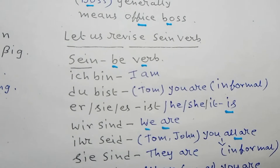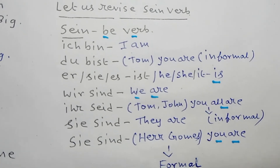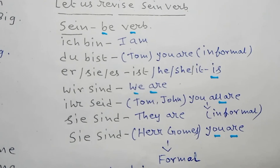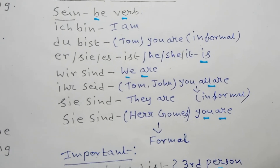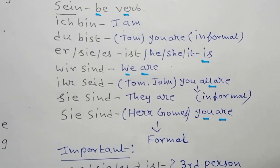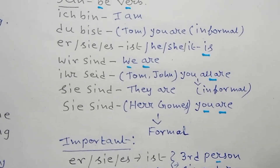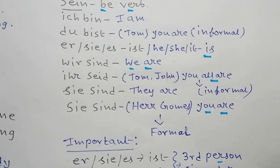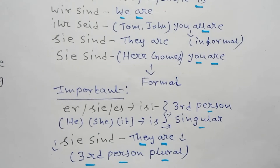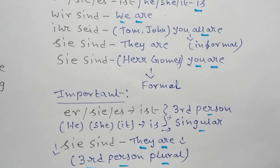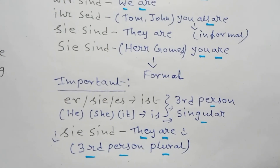Now let us revise the sein verb — the 'to be' verb. Ich bin: I am. Du bist: you are. Sie Tom, Sie sind: you are (informal). Er, sie, es ist: he, she, it is — third person singular. Wir sind: we are. Ihr seid, Tom, John: you all are (informal). Sie sind: they are — third person plural. Sie sind, Herr Goms: you are (formal). It is important to note that er/sie/es ist is third person singular, and sie sind is third person plural.